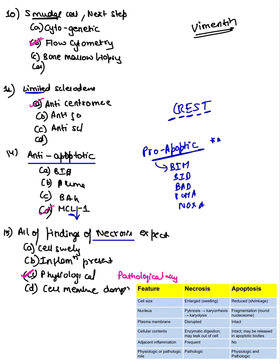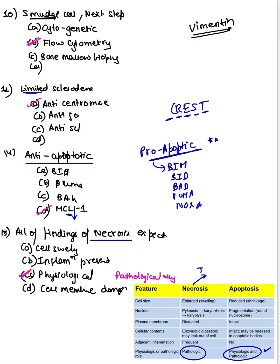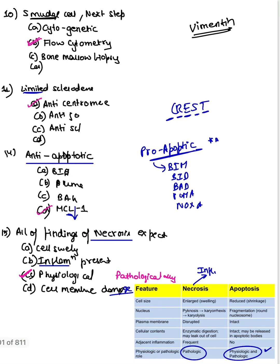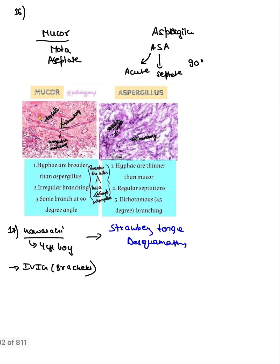They asked about findings of necrosis in exams. Necrosis is only a pathological phenomenon, not physiological, while apoptosis is both. In necrosis, inflammation is present, resulting in cell membrane damage and cell swelling — this is the key difference between necrosis and apoptosis.